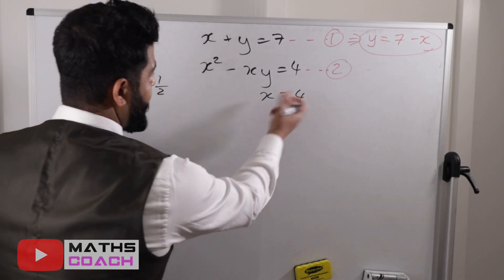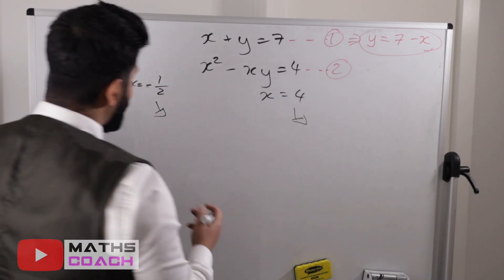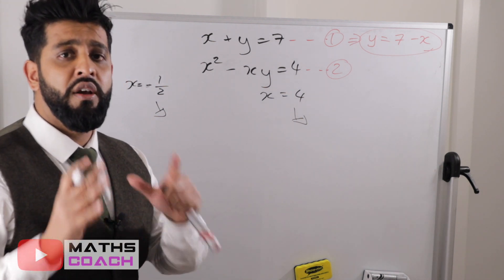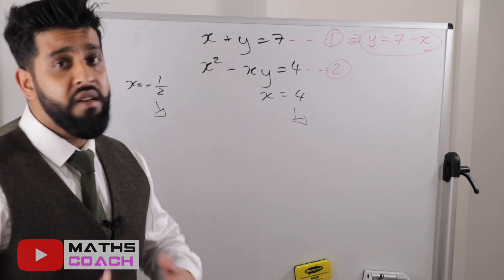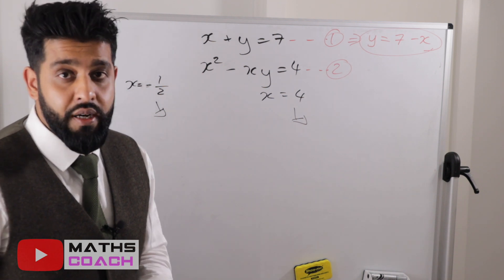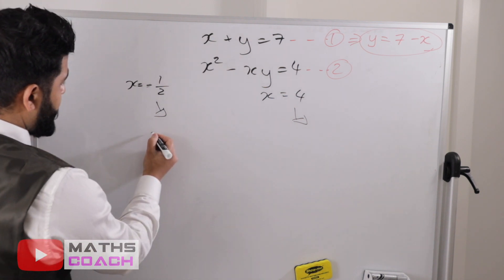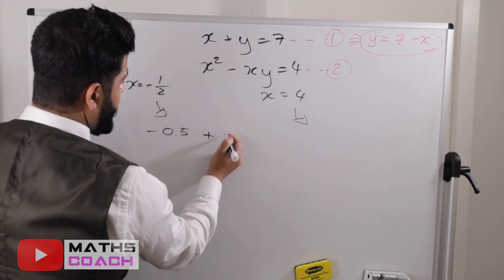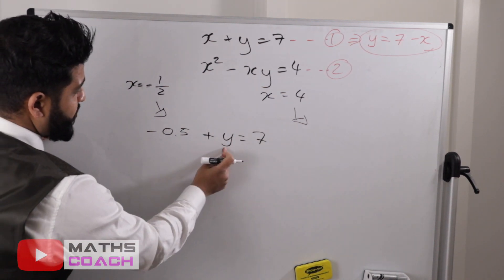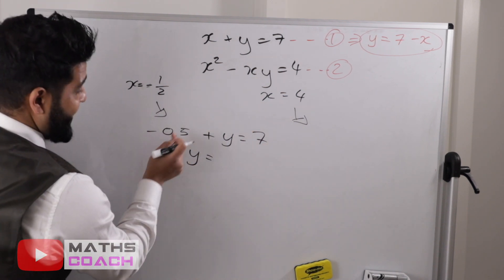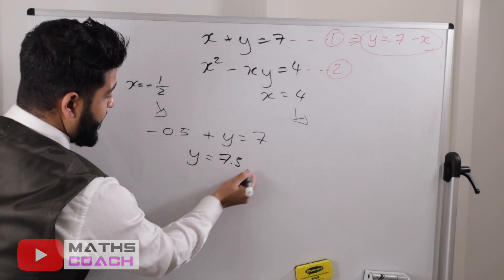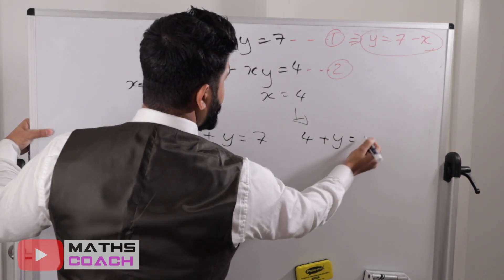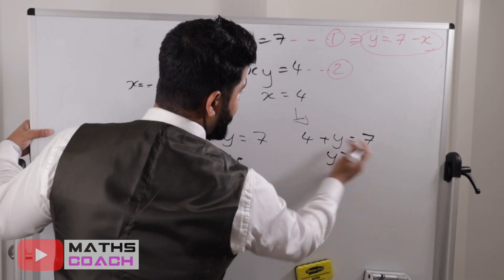Now substituting both x values into the linear equation to find y. Using x equals minus 0.5: minus 0.5 plus y equals 7, so y equals 7.5. Using x equals 4: 4 plus y equals 7, so y equals 3. So our solution pairs are x equals minus 0.5 with y equals 7.5, and x equals 4 with y equals 3.